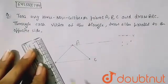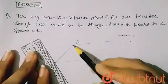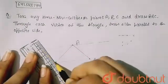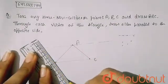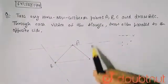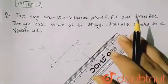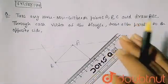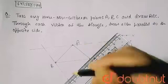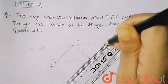From vertex B, I have to draw a line parallel to the opposite side AC — it will be drawn like this. Similarly, from vertex C, the opposite side is AB, so I draw a line parallel to AB — it will be drawn like this.